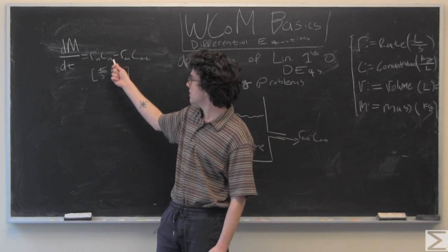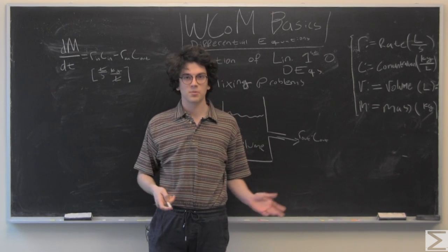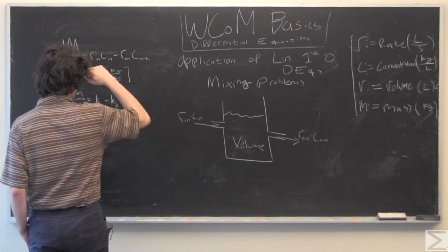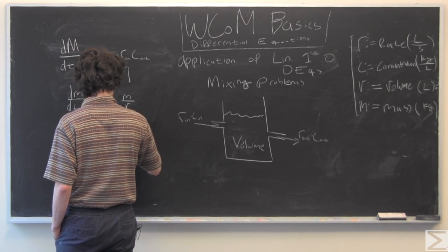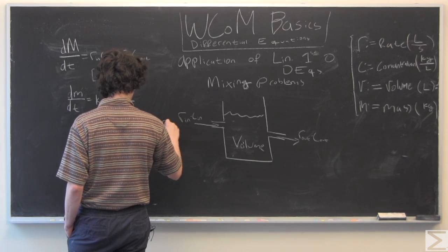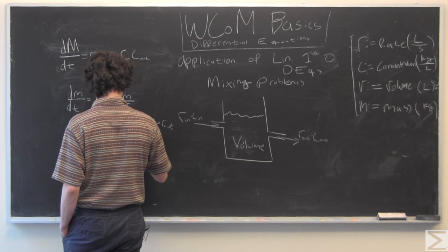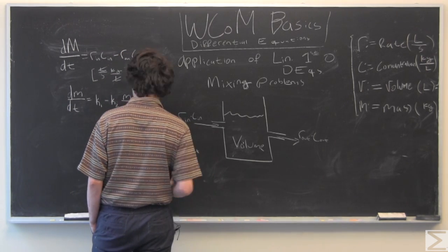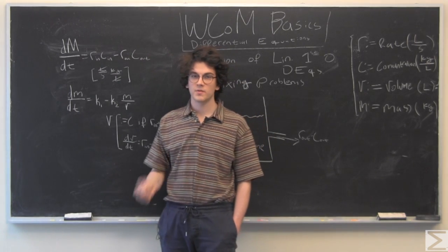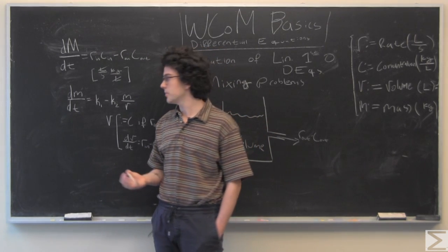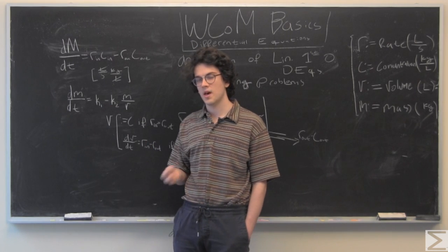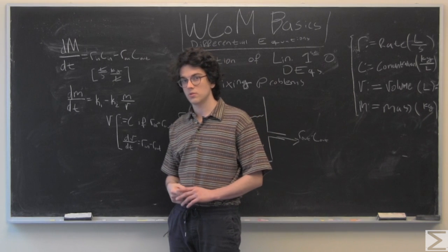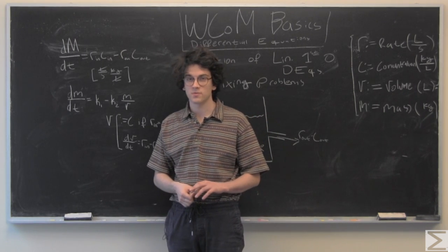So, and since we're given this and we're given R out, we're just going to replace those with constants. So, what I've done here is put everything in terms of our main variables. We have mass and volume and, of course, time.